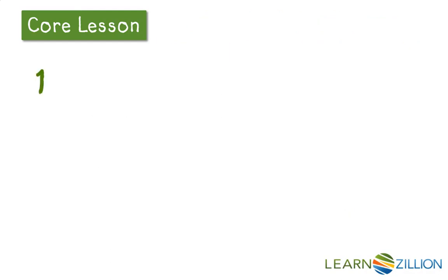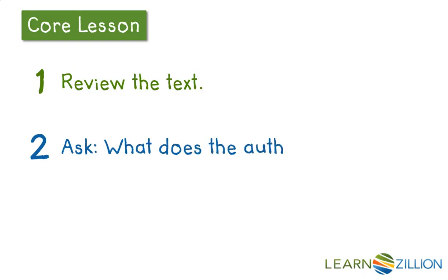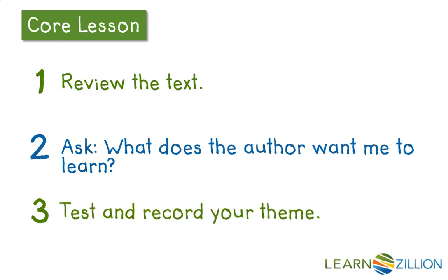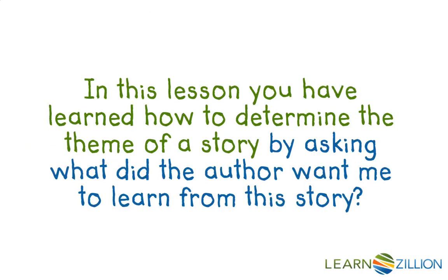You'll notice I went through a few steps to determine the theme. One, review the text and what you learned from it. Two, ask what does the author want me to learn — make that list. And three, test and record your theme, making sure you're looking for evidence and then writing your theme down. In this lesson, you have learned how to determine the theme of a story by asking, what did the author want me to learn from this story?